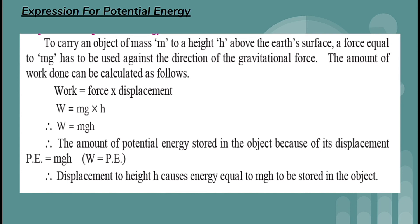The amount of work done is calculated as: W = force × displacement = mg × h, therefore W = mgh. The potential energy stored in the object due to its displacement to height h is therefore PE = mgh.